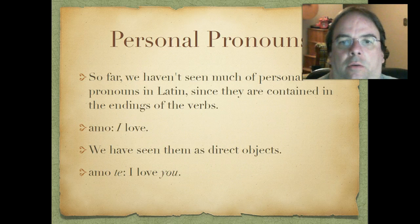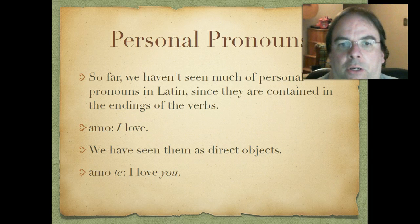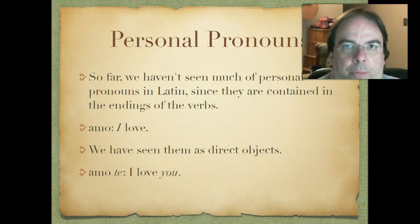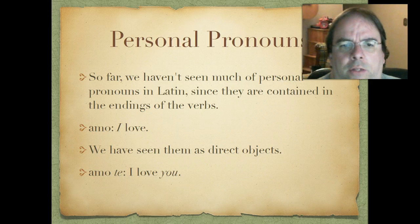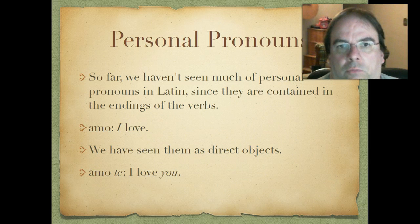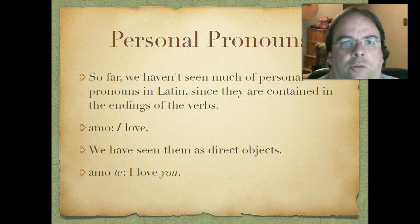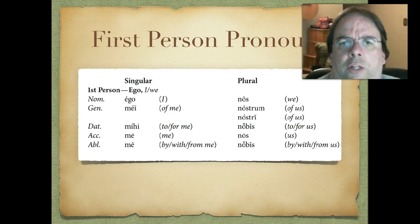So far we haven't seen very much of these personal pronouns as we've studied Latin, mainly because they're already contained in the ending of the verb as far as the subject is concerned. So we don't necessarily need a separate personal pronoun. We can say amo — I love — the -o indicates first person singular. We've seen them as direct objects though: amo te, I love you. So we really haven't thought about them too much, but as far as the nominative cases we really haven't seen those yet.